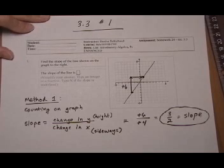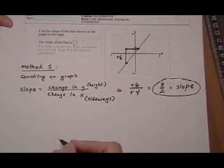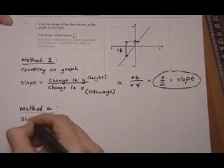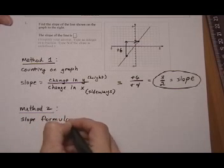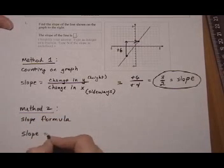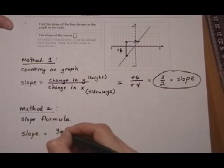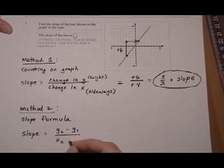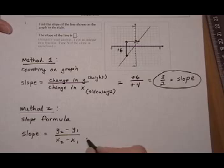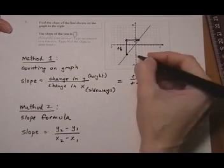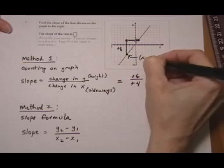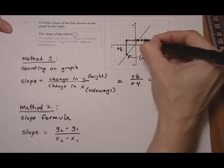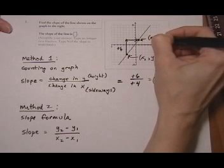The other way you can do this kind of problem is to use the slope formula. The slope formula tells us that slope equals the change in y positions — y2 minus y1 — divided by the change in x positions — x2 minus x1. We need to label our points: the first point gets x1, y1, and the second point up top gets x2, y2.